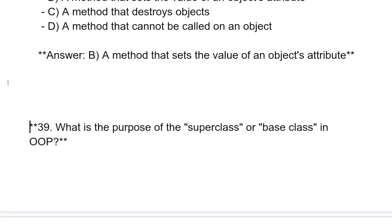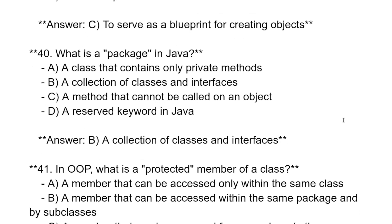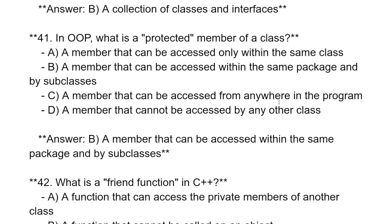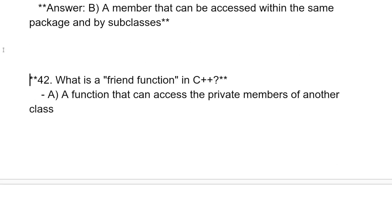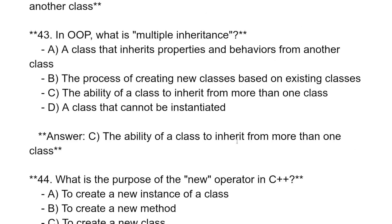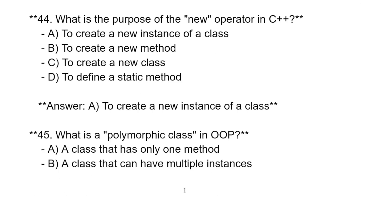What is the purpose of the superclass or base class in OOP? To serve as a blueprint for creating objects. What is a package in Java? A collection of classes and interfaces. What is a protected member of a class? A member that can be accessed within the same package and by subclasses. What is the friend function in C++? A function that can access the private members of another class. What is multiple inheritance? The ability of a class to inherit from more than one class. What is the purpose of the new operator in C++? To create a new instance of a class.